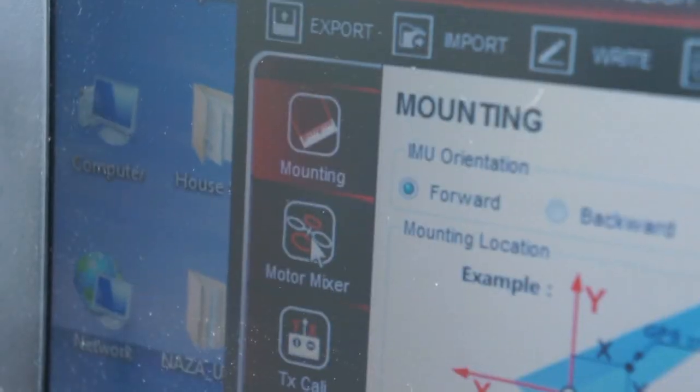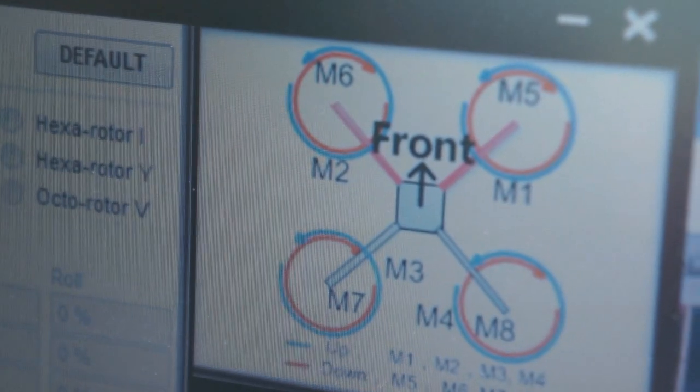The second page we're worried about here is the motor mixer page. That is where you establish what type of copter you're going to be flying.